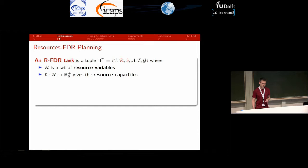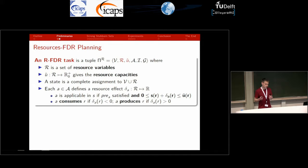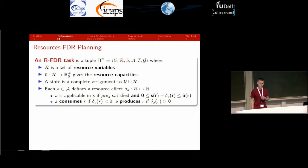Obviously the plans are just given by applying both buy actions in any order. Now a resource FDR task is an extension of an FDR task by a set of non-negative resource variables. We assume that each resource variable is bounded from above by a finite resource capacity. The states are given by complete assignments to the FDR variables as well as the resource variables, and each action additionally specifies for each resource variable an additive resource effect. The value of a resource is obtained by adding the resource effect to its current value, but only if the result does not fall below zero and does not exceed the maximum resource capacity.